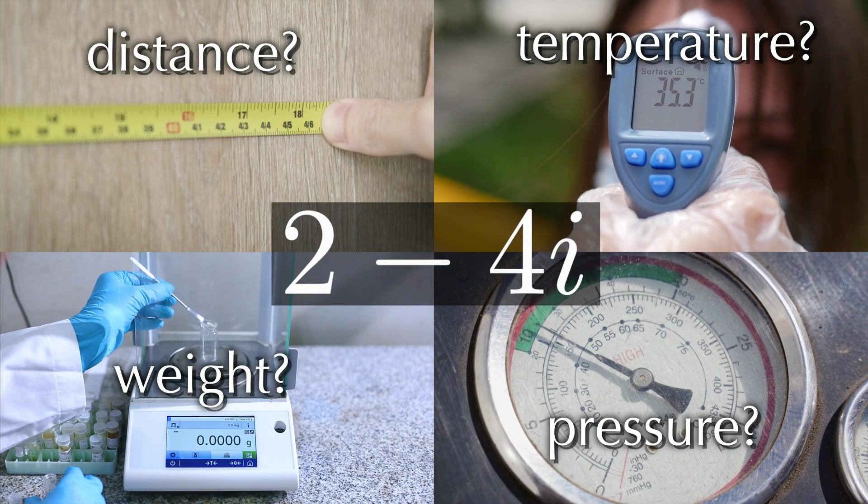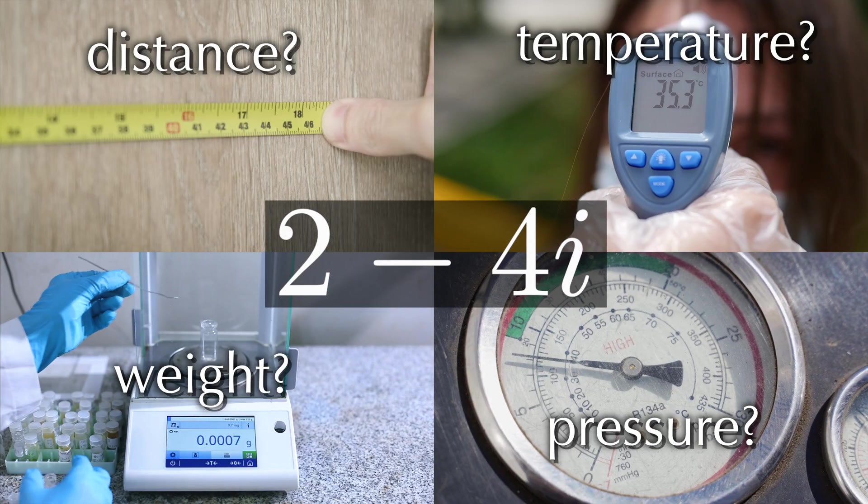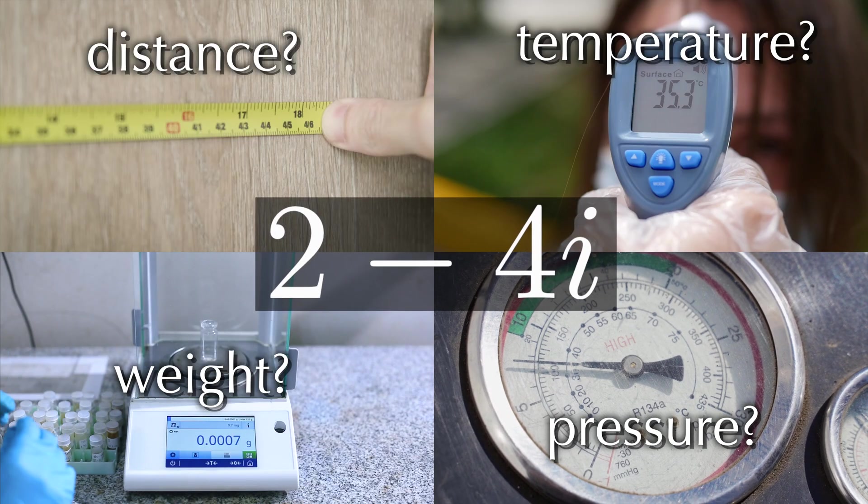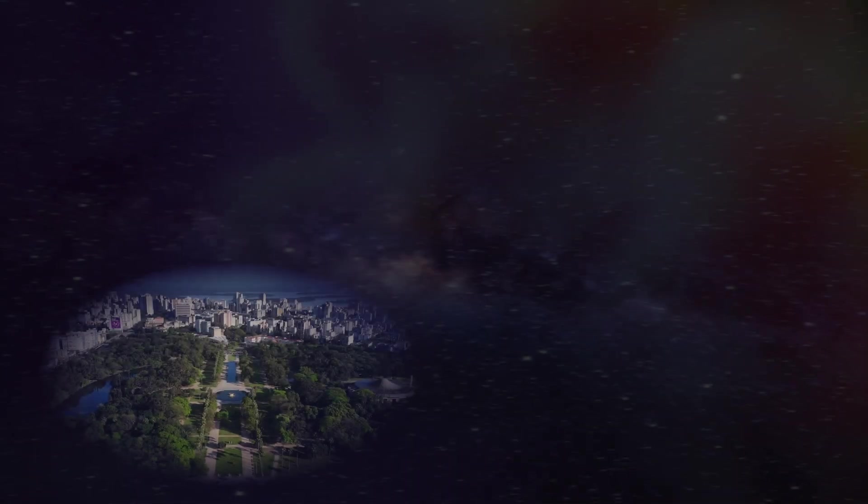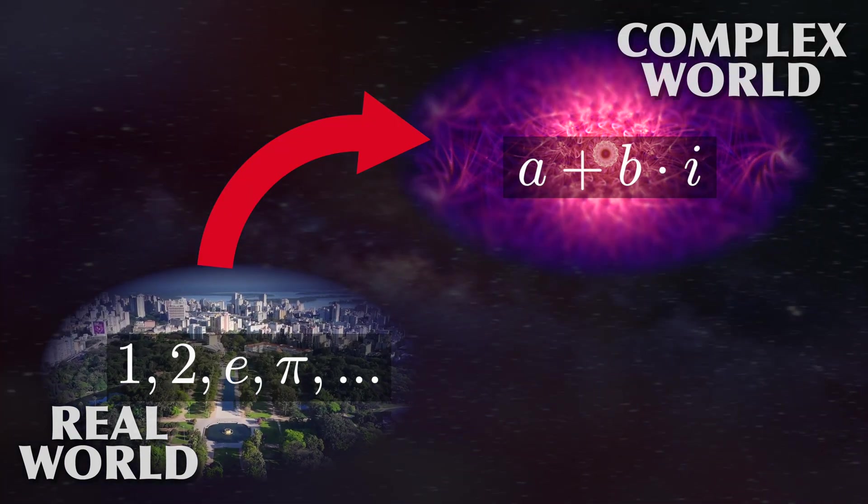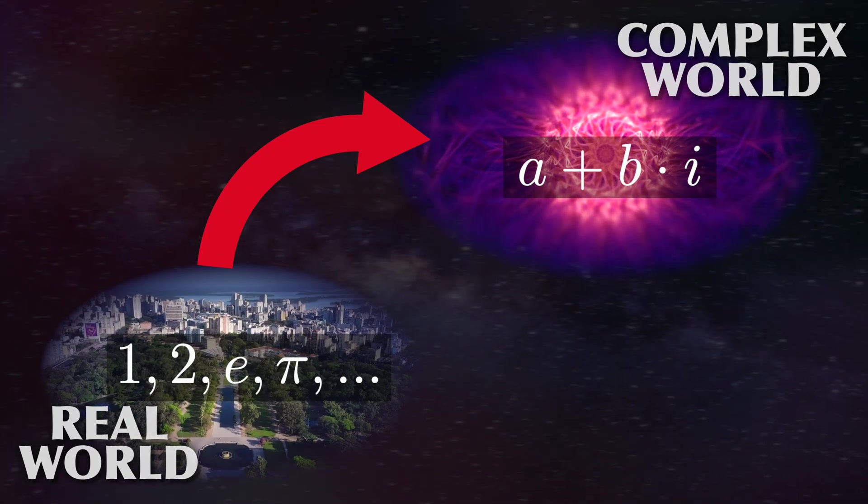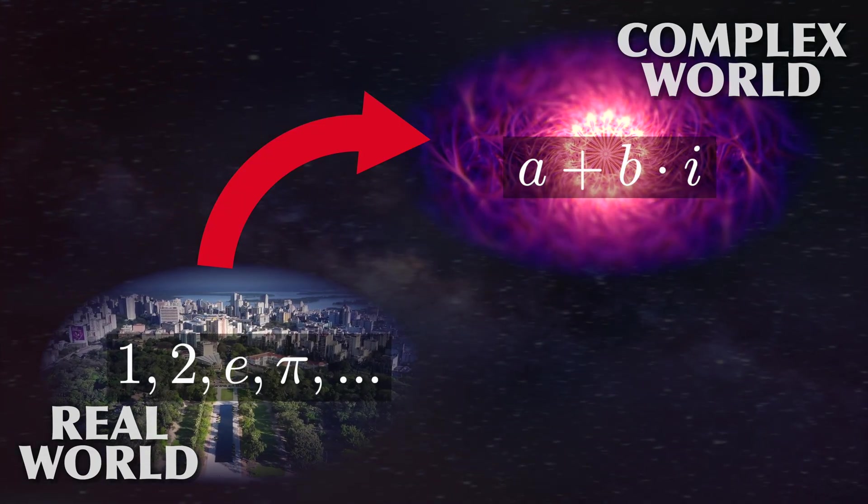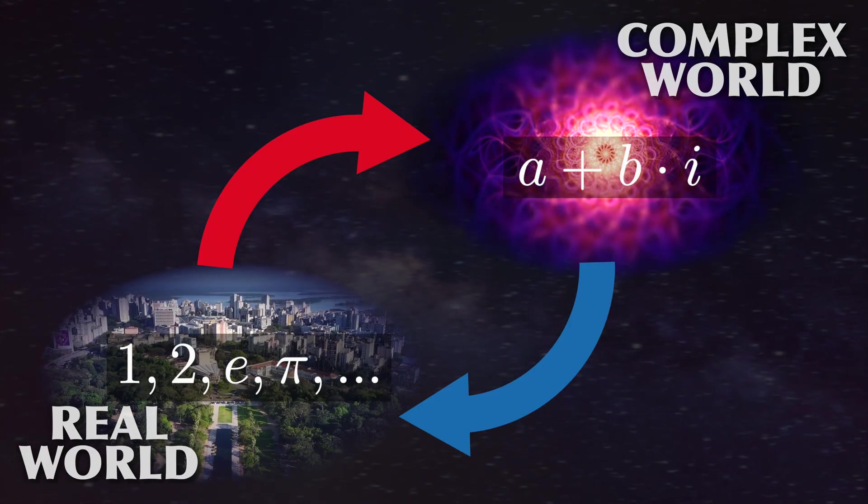So yeah, complex numbers do not exist in the sense that it's impossible to directly assign a complex number to any property in the real world. But it turns out that calculating with complex numbers has a lot of advantages, and we really want to make use of those. So what we can do, in many cases, is artificially translate a use case into a complex number problem, capitalize on complex number rules to solve it, and then transfer the result back to the real world. This may sound a bit vague, so let's get into a concrete example.